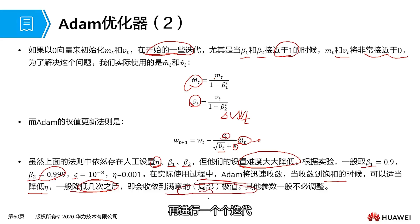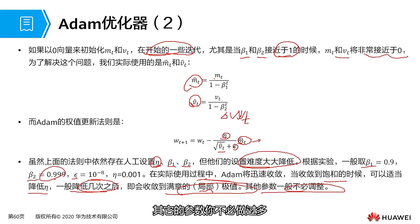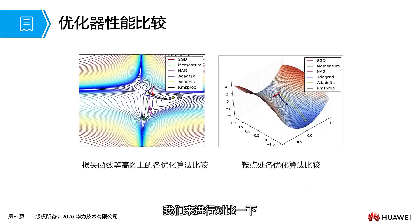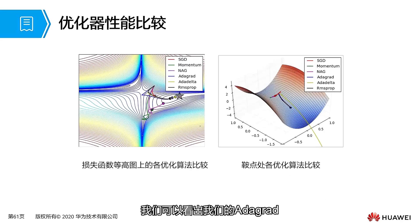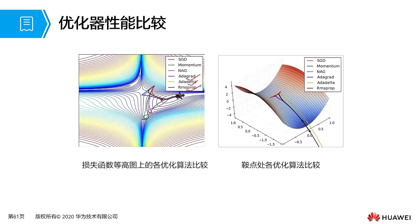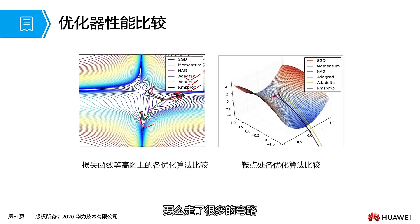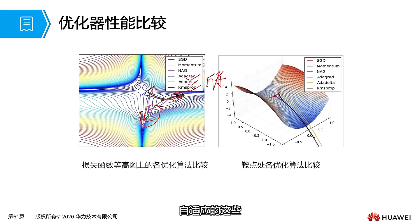This is our Adam optimizer — one of its update steps for our delta W. Let's make a comparison of these optimizers' performances. We can see that AdaGrad, AdaDelta, and RMSProp are able to find our optimal solution faster. Other optimizers are either very slow or take many detours. So during our engineering experiments, try to use these adaptive optimizers as much as possible. Due to this adaptation, they can contribute to better convergence and are better able to find our lowest point.